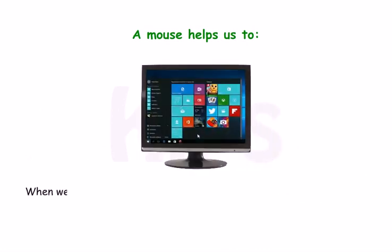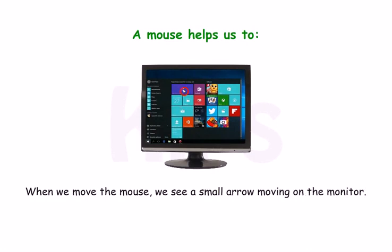When we move the mouse, we see a small arrow moving on the monitor. This arrow is called the mouse pointer.